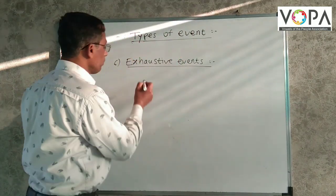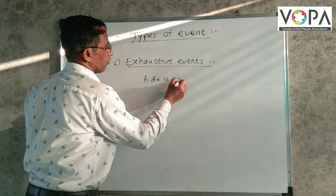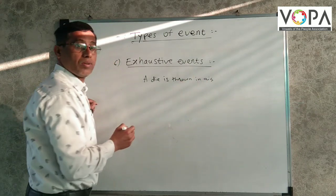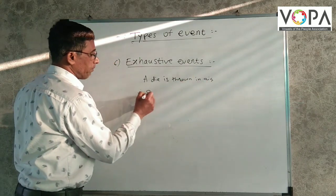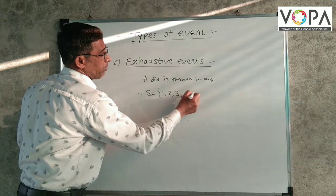Suppose a die is thrown. Therefore, sample space is 1, 2, 3, 4, 5, 6.